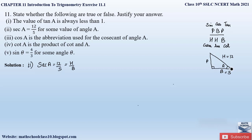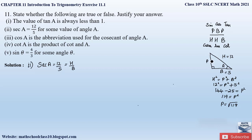Applying the Pythagorean theorem: hypotenuse² = perpendicular² + base², so 12² = perpendicular² + 5², giving 144 − 25 = 119 = perpendicular². So perpendicular = √119, which is clearly less than 12. Since the hypotenuse is the longest side, this ratio is valid. Therefore, sec A = 12/5 is true.